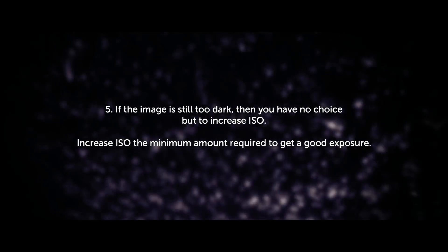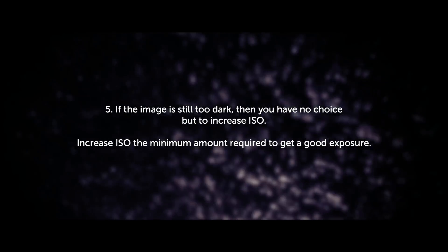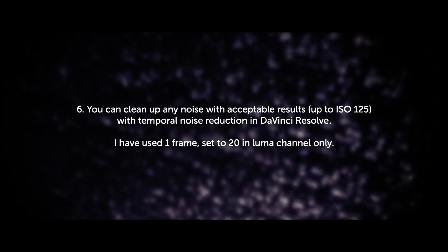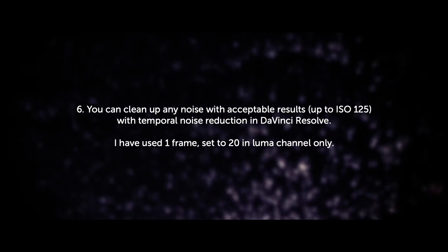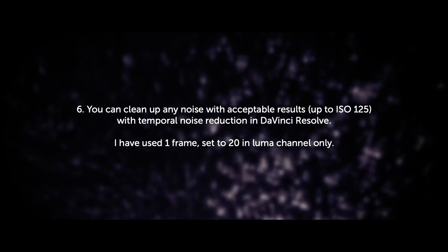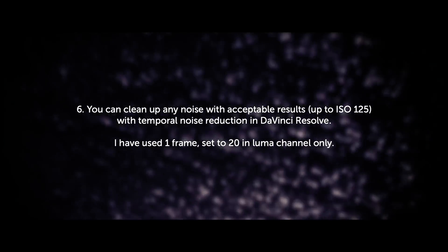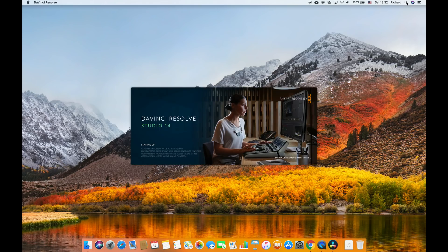If the image is still too dark, then you have no choice but to increase ISO. Increase ISO the minimum amount required to get a good exposure — I've used a maximum of ISO 125. You can clean up video noise with acceptable results up to about ISO 125 with temporal noise reduction in DaVinci Resolve. Note the noise reduction tools are only available in DaVinci Resolve Studio, not in the free version. Now let's compare how much video noise we can expect as we increase the ISO from 22 to 125 and finally to 400.